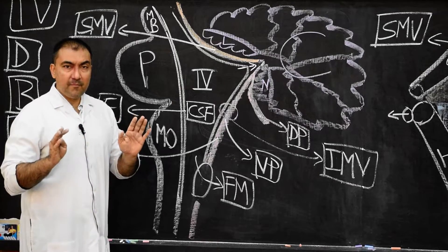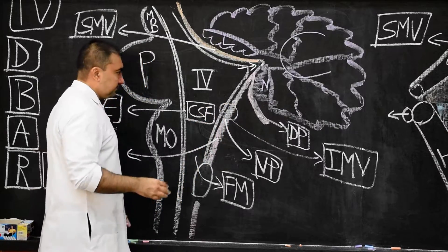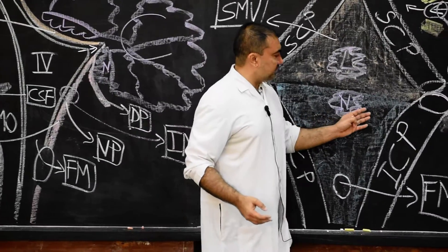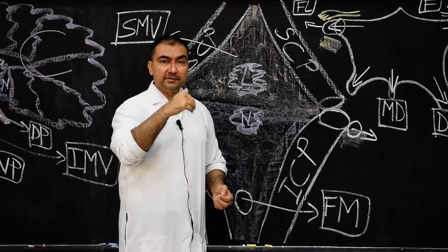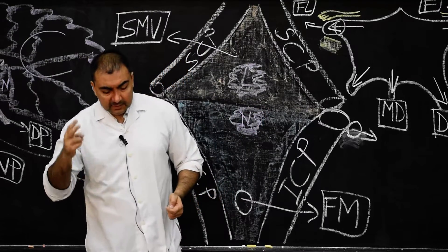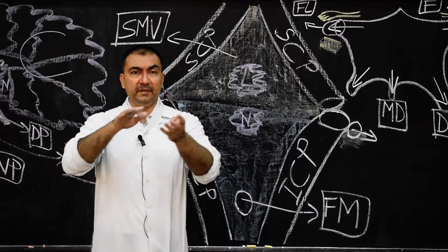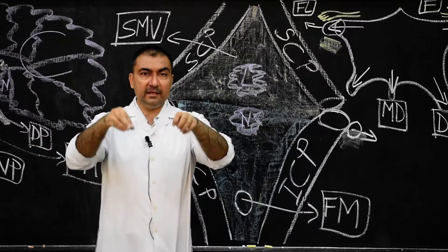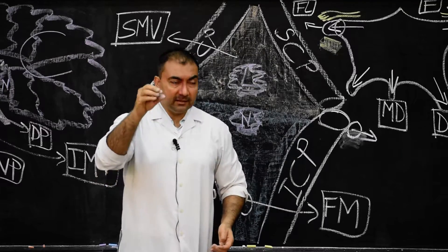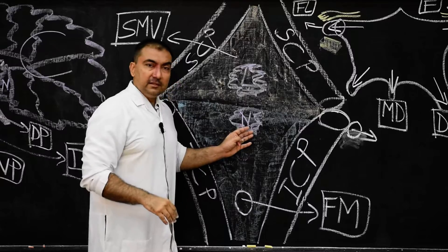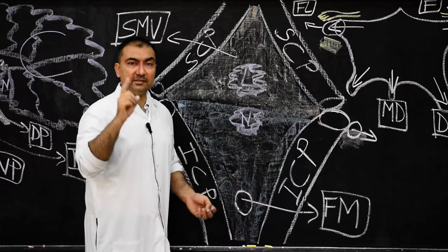Here we come to the tela choroidea. The choroid plexus is basically the capillaries — branches of the arteries — as they penetrate the layers of the tela choroidea, which is double-layered pia matter. Whenever capillary plexuses are present between these two layers of pia matter, they penetrate the roof of the fourth ventricle, and that penetration with capillaries through the double-layered pia matter is called the choroid plexus.